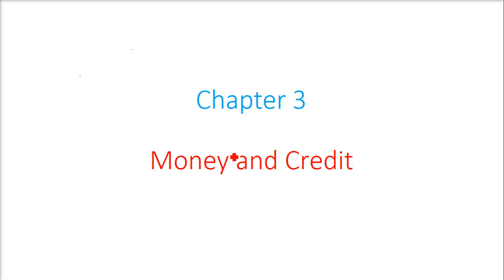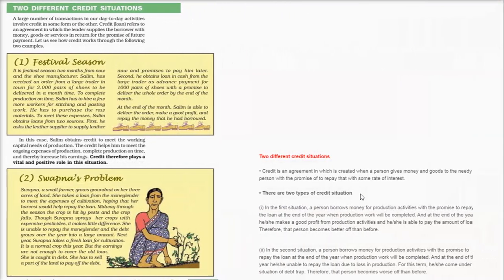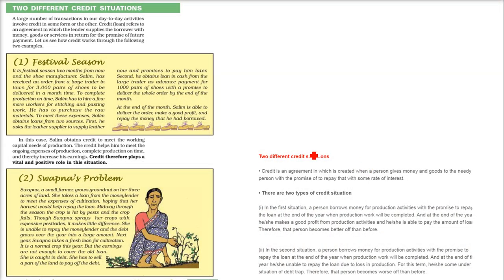We are taking chapter number 3, money and credit. We saw the two different credit situations: first for Salim, second for Swapna.